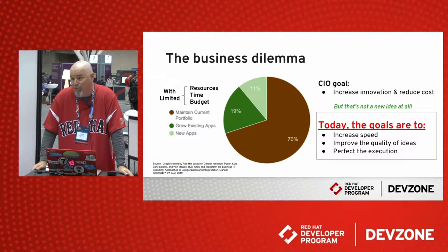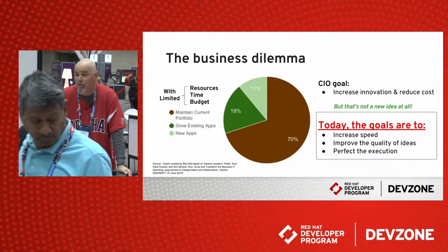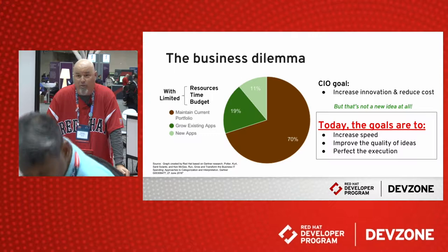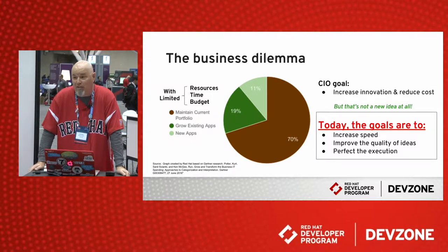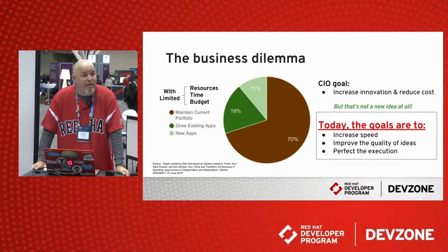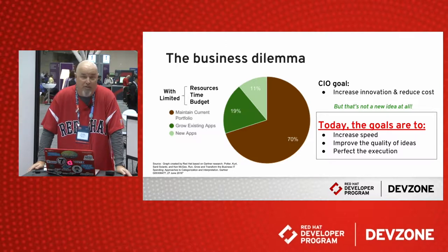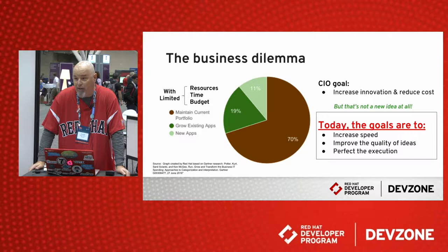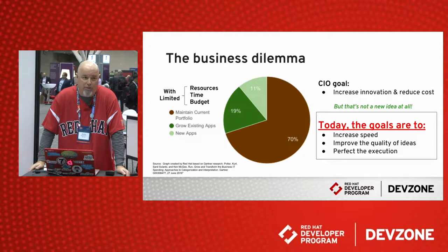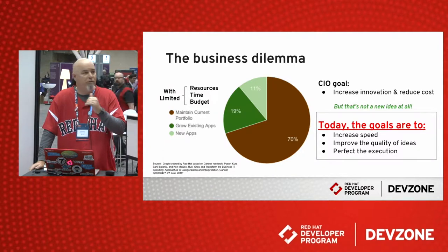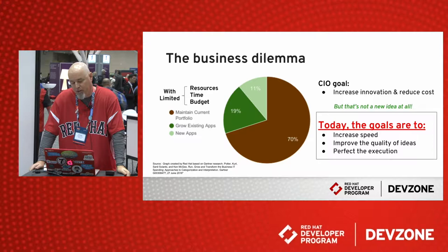Part of the question becomes, why are we even talking about this? What's the dilemma that CIOs, or just generally in a company, everybody is starting to face? It always comes down to a question of time and money. A lot of the money spend is going into keeping the lights on — keeping the current portfolio running affordably — while also enhancing existing apps and creating new ones to respond to business changes.